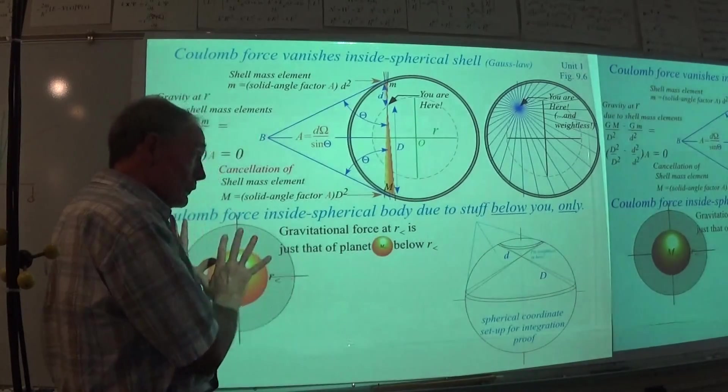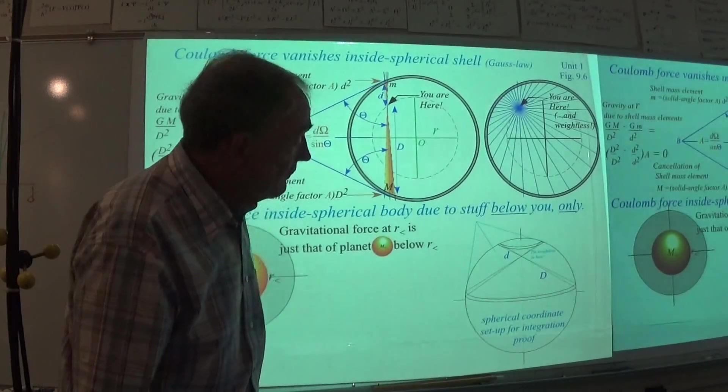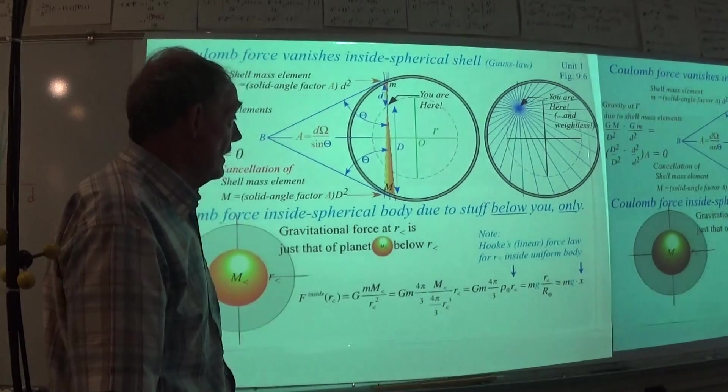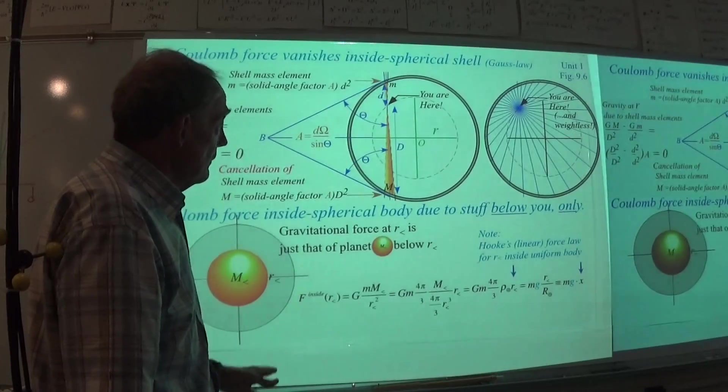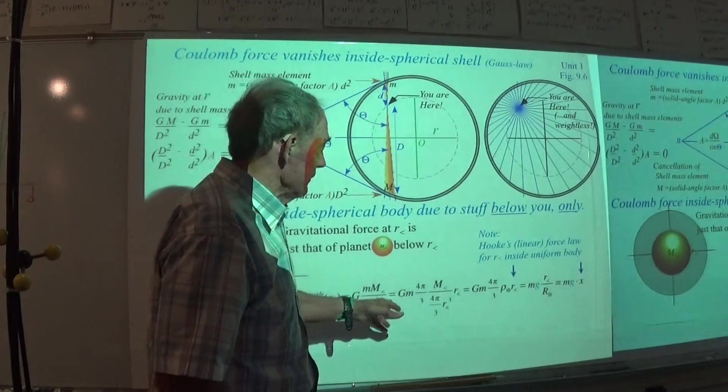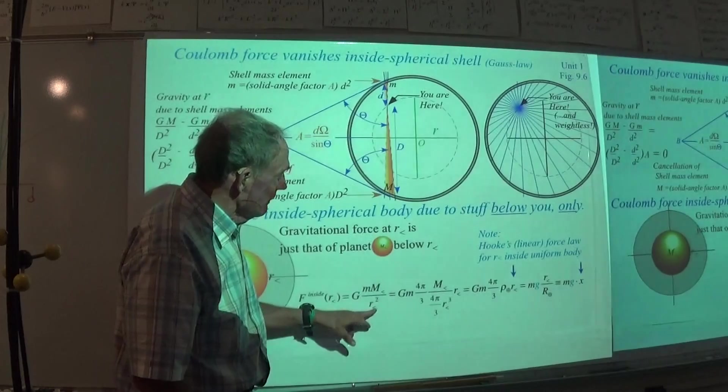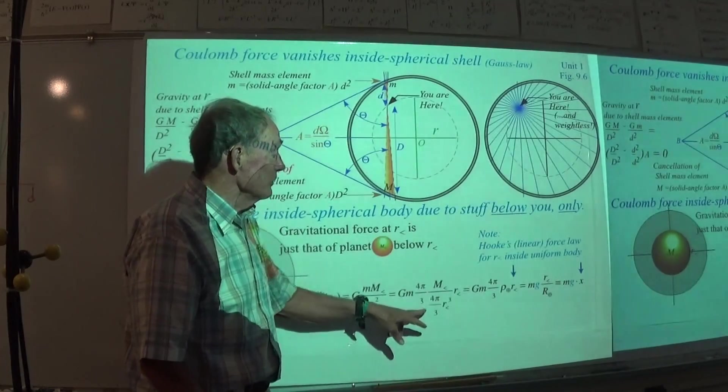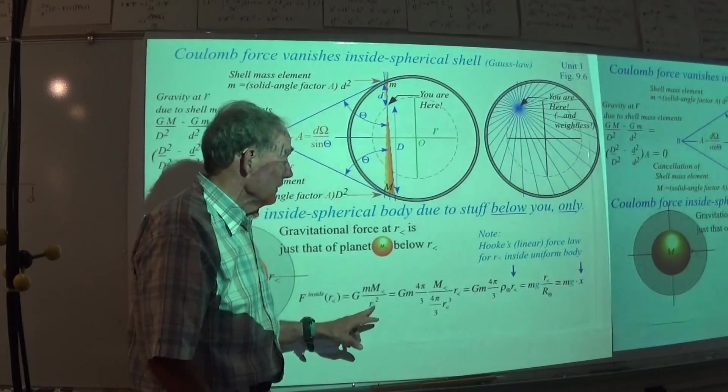That's assuming uniform density, which Earth is not. So when you use that argument, then you can say, it's mass less r less squared, and then you just figure out what that is.